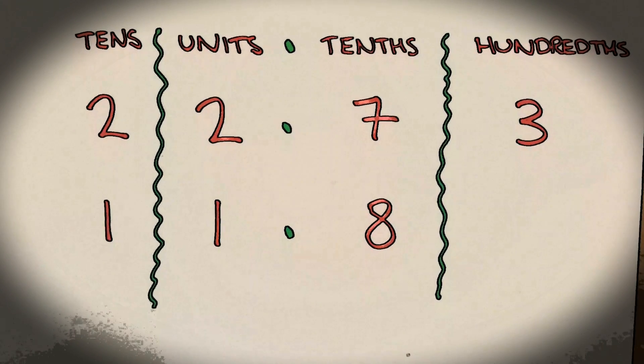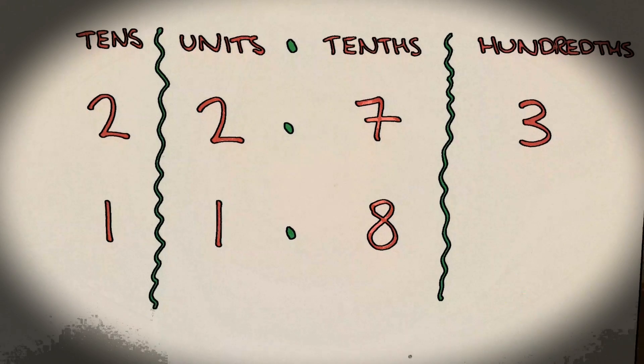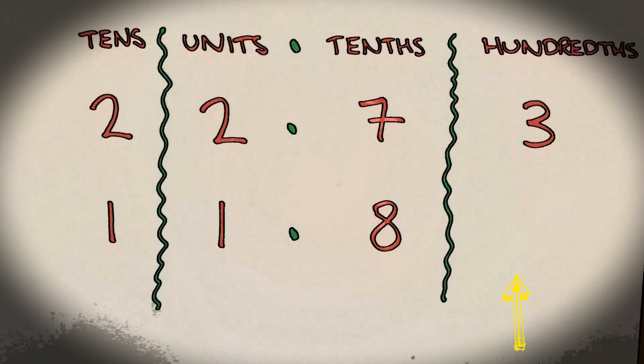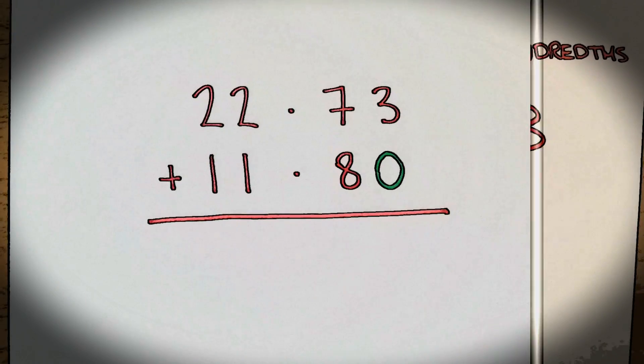If one of the columns is blank, you can add a zero if this helps you. So adding from right to left: